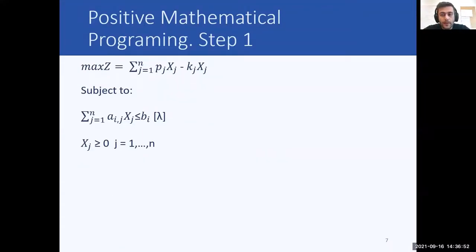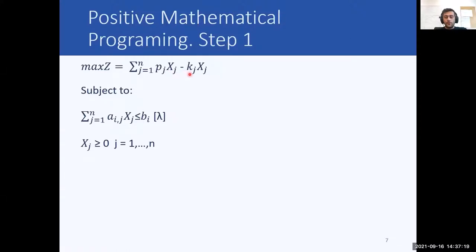Let us consider the following profit-maximizing LP problem. Z is the value of the objective function, P is the matrix of product prices, X is the vector of production activity levels, K is the vector of accounting costs per unit of activity. This objective function is subject to the resource constraint, where A is the matrix of coefficients, B is the vector of available resources, and lambda is the vector of dual values associated with the resource constraints. Such model specification yields over-specialization.